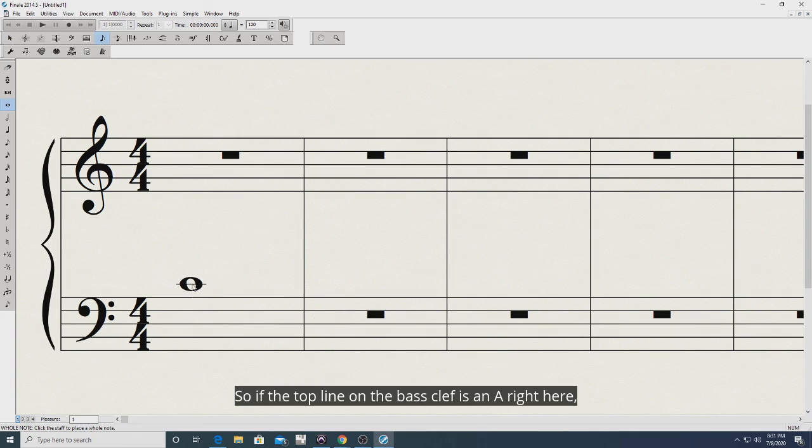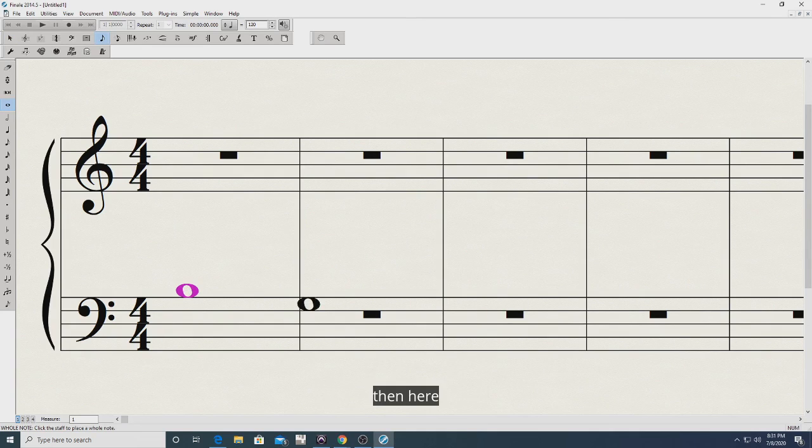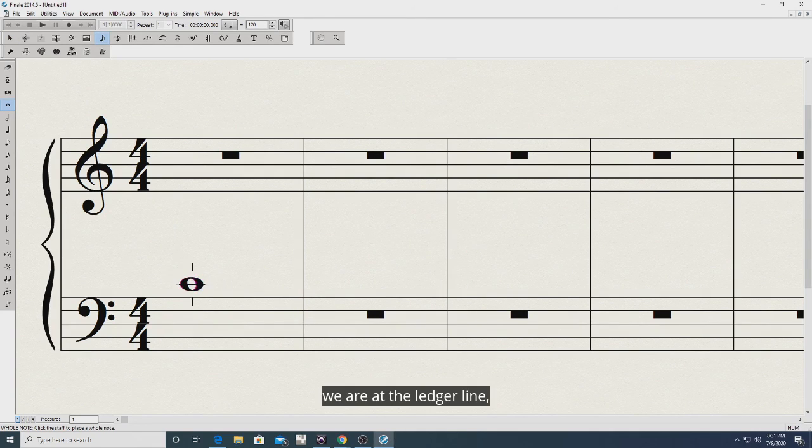So if the top line on the bass clef is an A right here, the space above it is a B, then here we are at the ledger line, which would be a C.